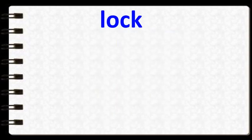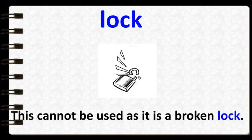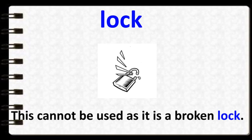The word is lock. Children, please repeat after me — look at the word and read it: lock. Let's see the image of a lock. Where do we use a lock? We use the lock at the door. When we go out, or at night when we go to bed, we lock the door. The sentence is: this cannot be used as it is a broken lock. The lock is broken, so obviously it can't be used.